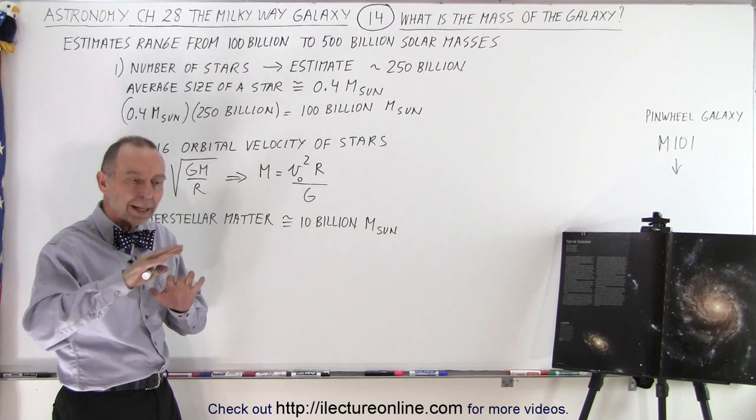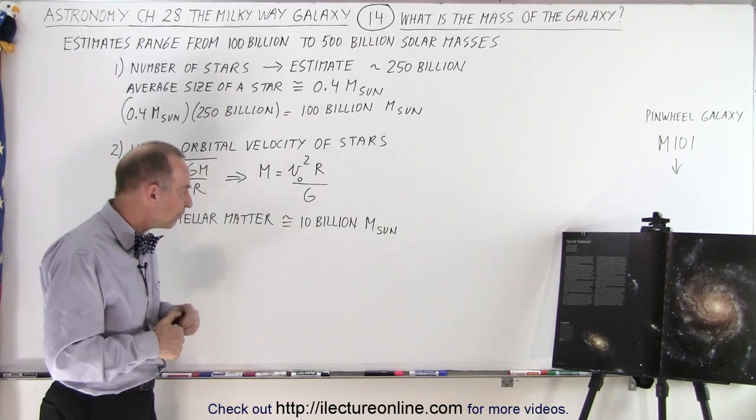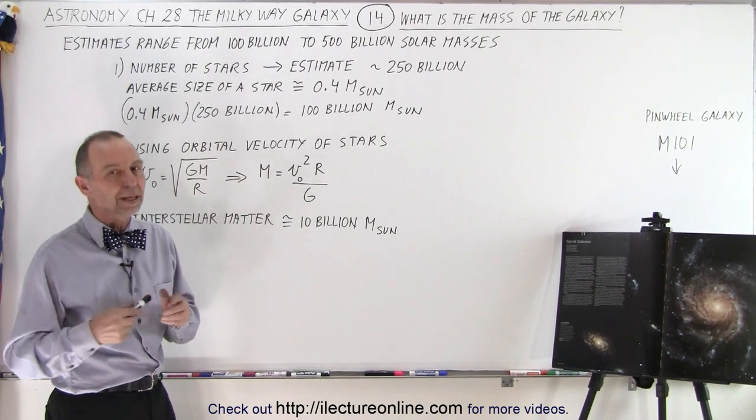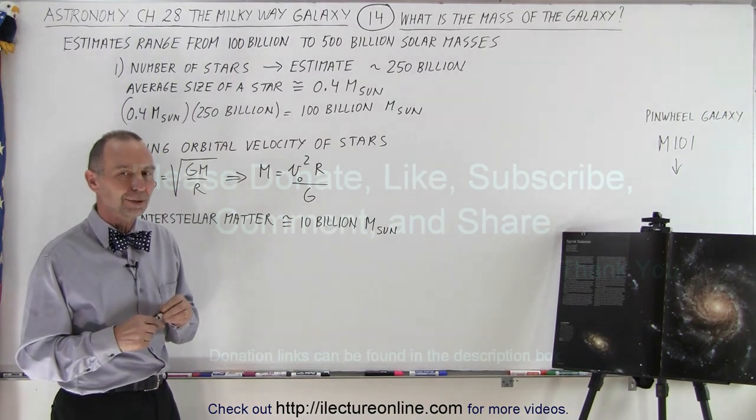Those are all the nebulas and the dust and all that. There's still about enough to make another 10 billion suns. So we're going to be making stars for a while, for a number of years to come.